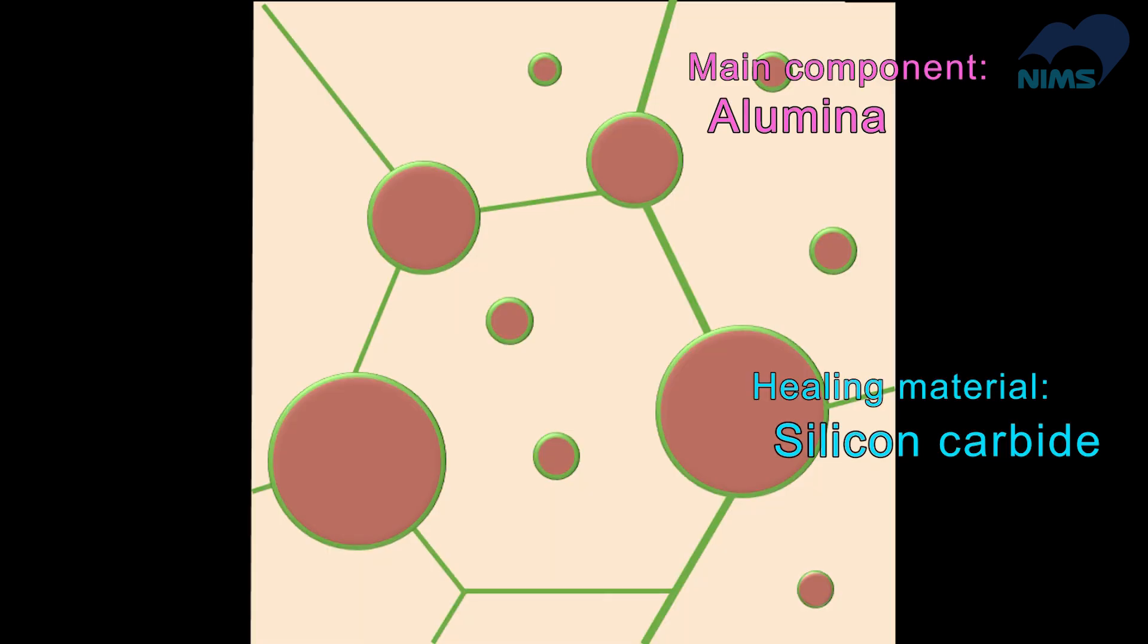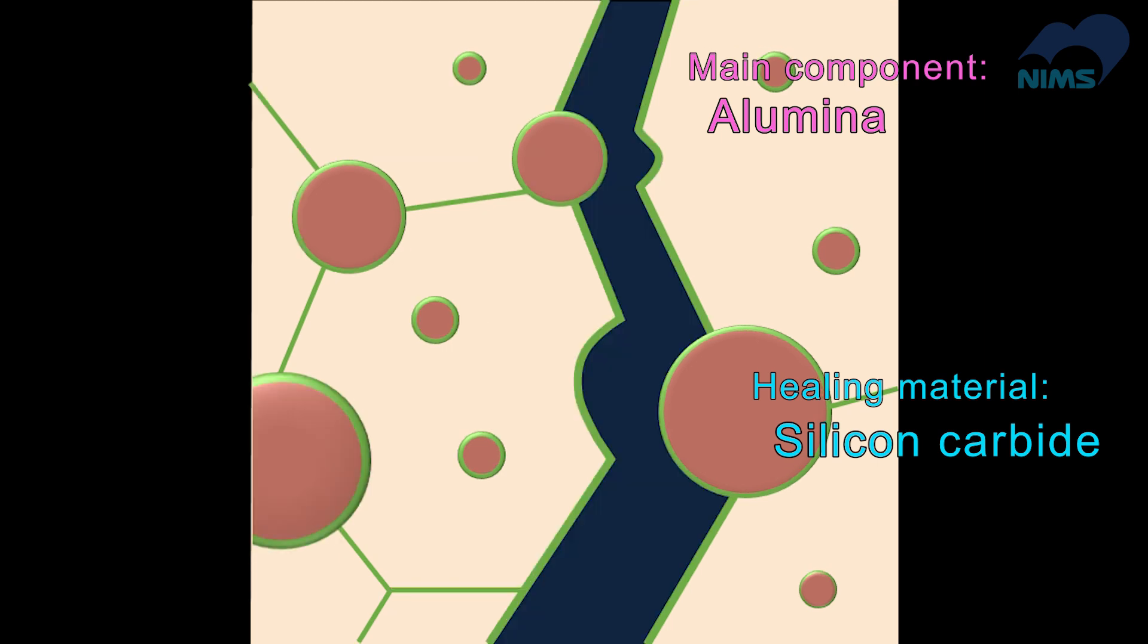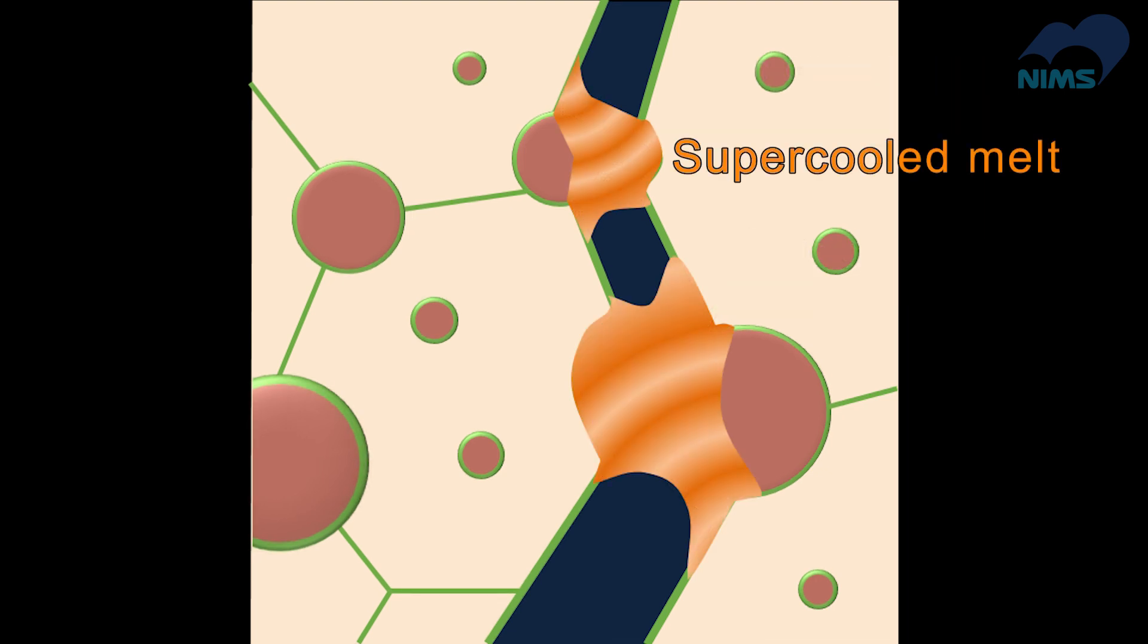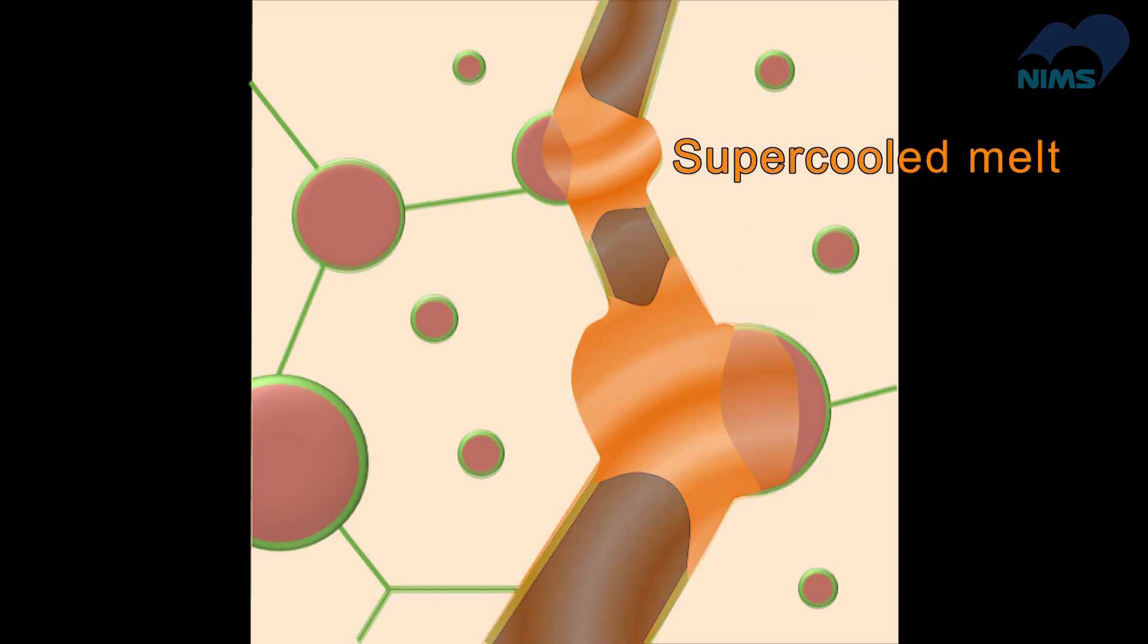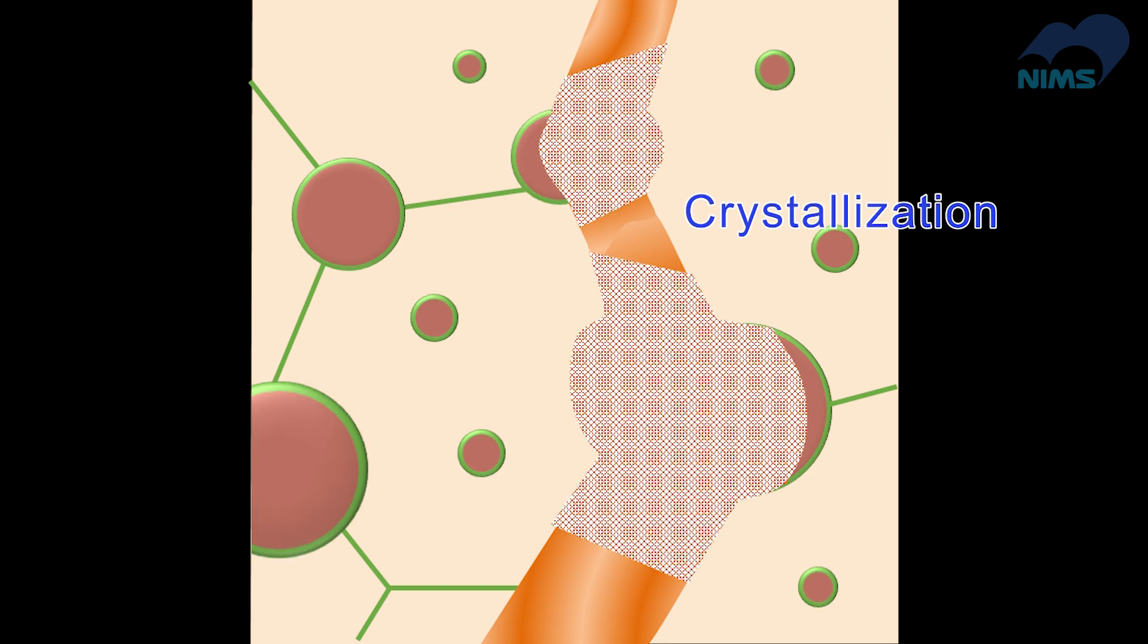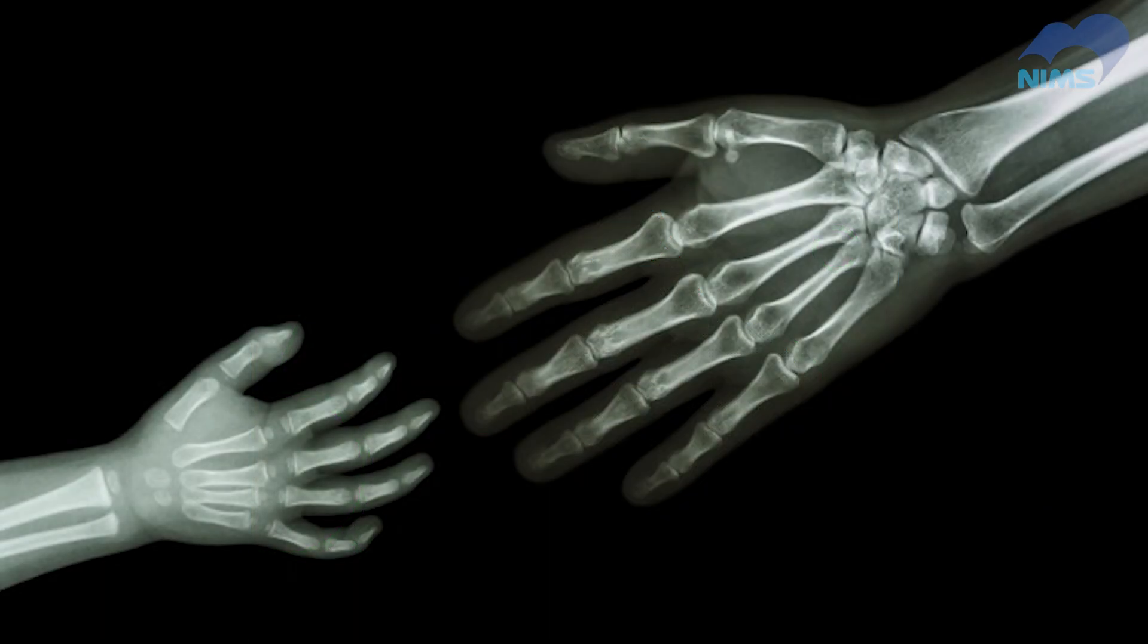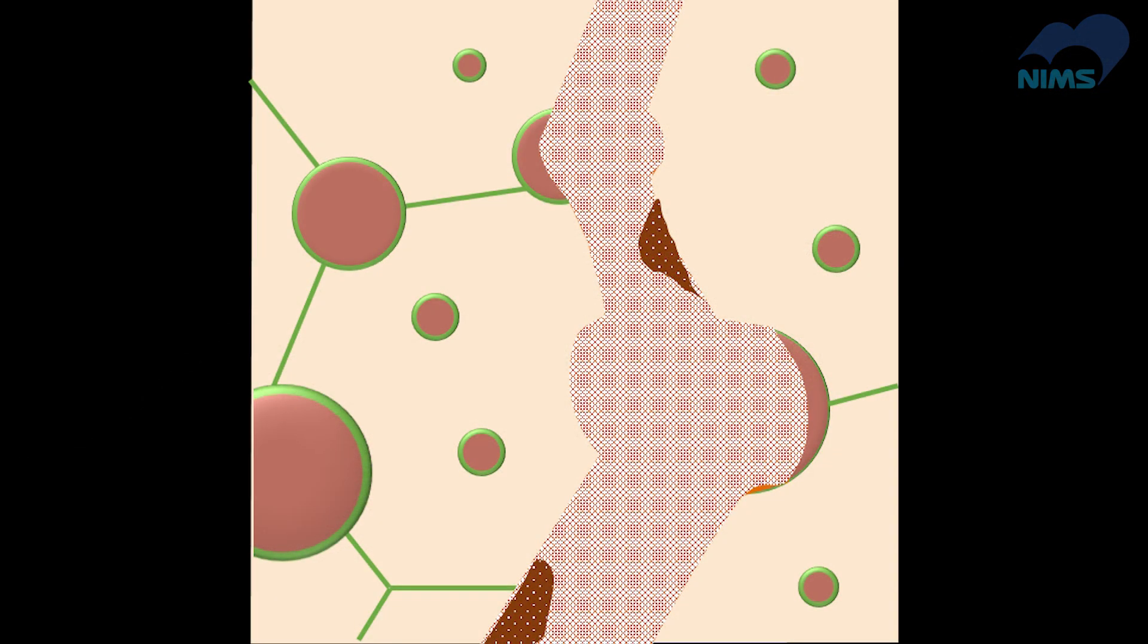Dr. Osada had successfully elucidated the healing mechanism. As soon as a crack appears, oxygen gas flows in, reacting with silicon carbide to form silicon dioxide. Then, silicon dioxide reacts with alumina to form a liquid-like substance called a supercooled melt, which fills the crack. Moreover, this supercooled melt crystallizes immediately, repairing the crack firmly and completely. This is exactly the same mechanism behind the recovery of living bones.